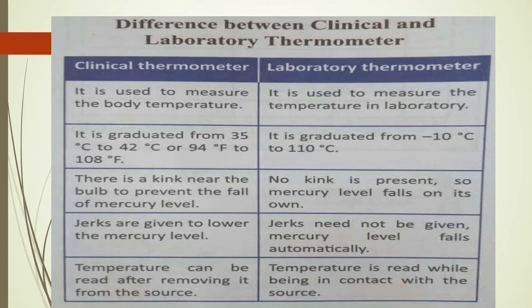The clinical thermometer is used to measure body temperature, graduated from 35°C to 42°C (or 94°F to 108°F). The laboratory thermometer is used for scientific purposes in laboratories, graduated from −10°C to 110°C. In the clinical thermometer there is a kink — a small bend in the capillary tube near the bulb — to prevent the mercury level from falling when the thermometer is removed from the patient's mouth.